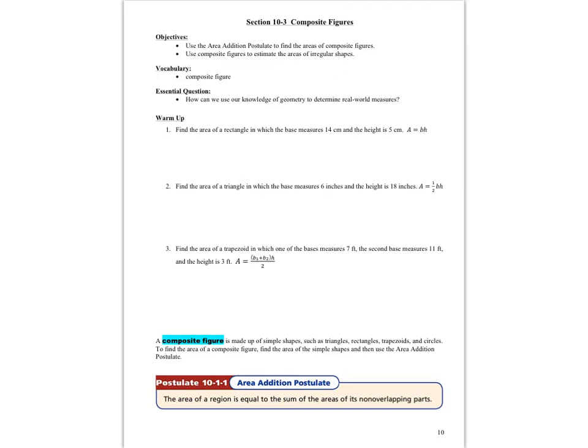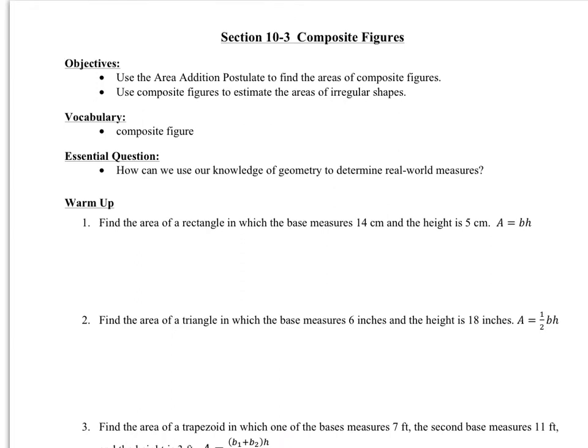Hi ladies and gentlemen. We're in unit 2 and we're going to be talking about composite figures, which in your textbook is related to section 10.3. We're going to be using the area addition postulate to find the areas of composite figures, and we're going to use composite figures to estimate the area of irregular shapes. New vocab is just composite figure.